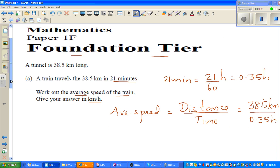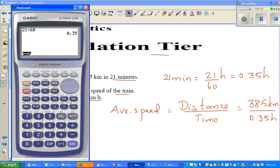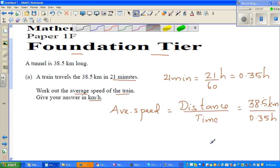So that is 38.5 divided by 0.35h. Again I need a calculator. 38.5 divided by 0.35h, which is 110 kilometers per hour. So this is 110 km/h.